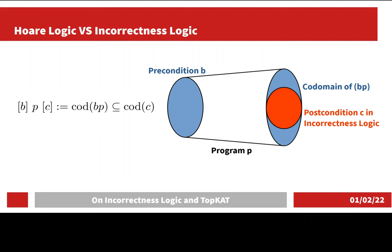On the other hand, in incorrectness logic, the postcondition specifies counterexamples, and counterexamples need to be reached by some input, hence the codomain needs to contain the postcondition.